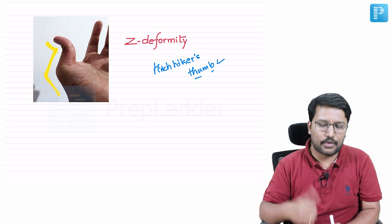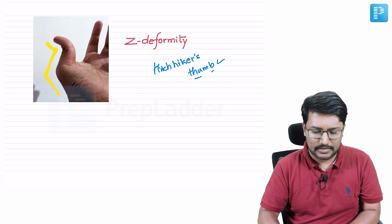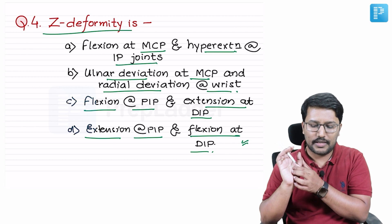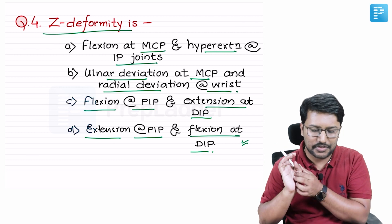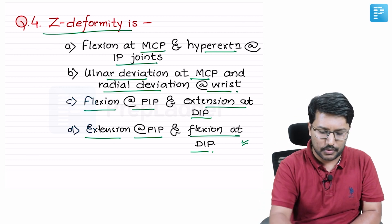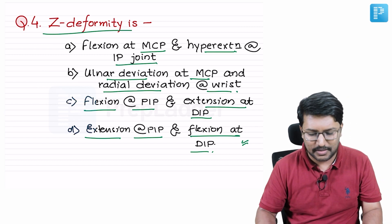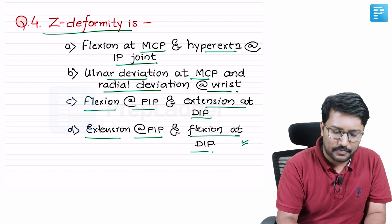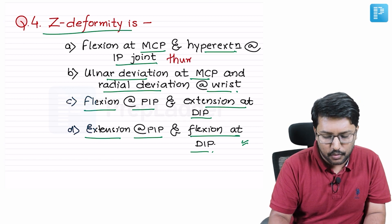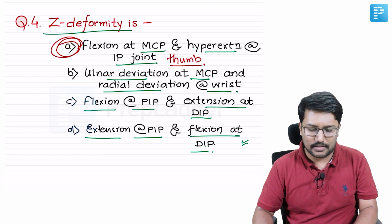It looks like someone is asking for a lift, which is why it is called hitchhiker's thumb. Flexion at the metacarpophalangeal joint and hyperextension at the interphalangeal joint is the only logical choice here. Ideally this should have been stated as flexion at MCP joint and hyperextension of IP joint of the thumb, and that becomes the correct answer.